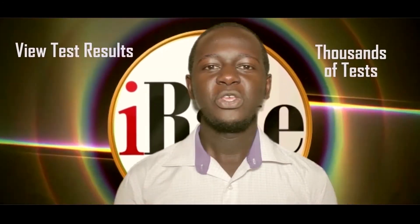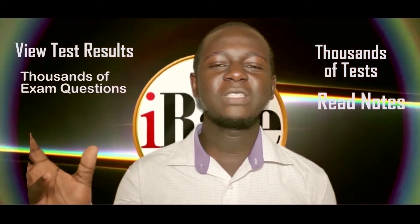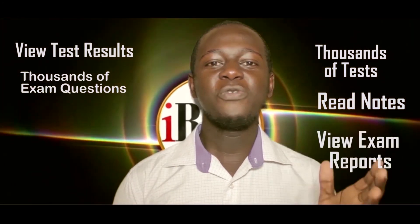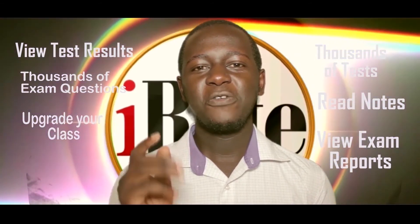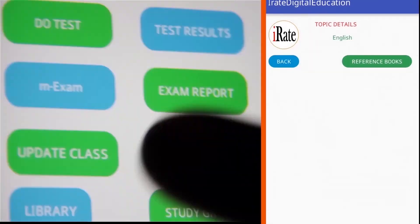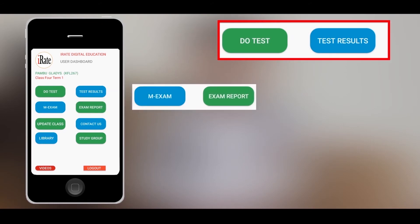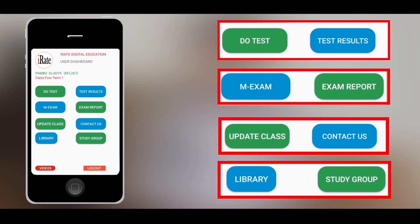So, what are the benefits of iRate? With the iRate application, you can be able to access and do thousands of tests, view test results, you can be able to read notes on these test results, you can also be able to access thousands of exam questions, view exam reports, upgrade your class, and read relevant topics from the label. iRate is simple to use. With iRate, I have been able to improve my grades. You will be able to access the following tabs: Do test, test result, mExam, exam report, update class, library, study group, and contact us.